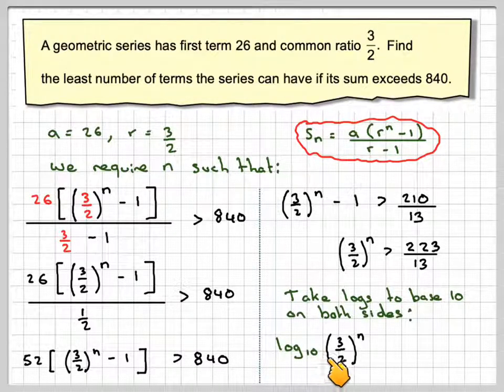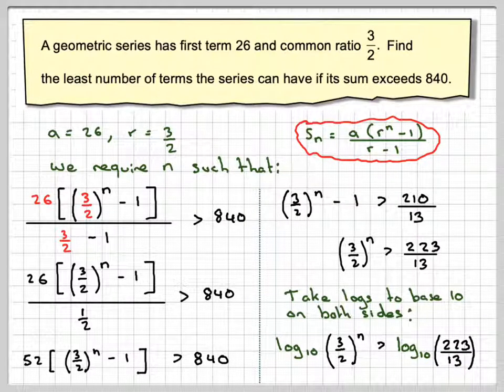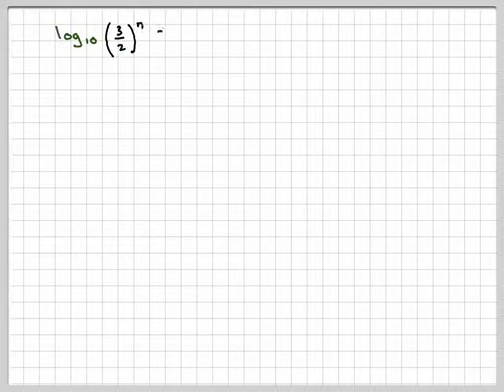So that becomes log to the base 10 of 3 over 2 to the n is greater than log to the base 10 of 223 over 13.